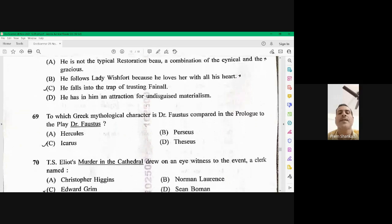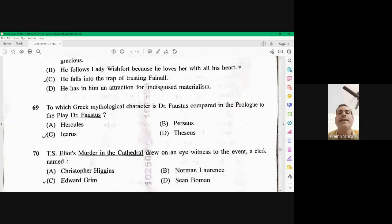Question number 70. T is Iliad. More than the cathedral drew on an eyewitness to the event, a clerk named, the clerk is named as Edward Green. C is the right option.